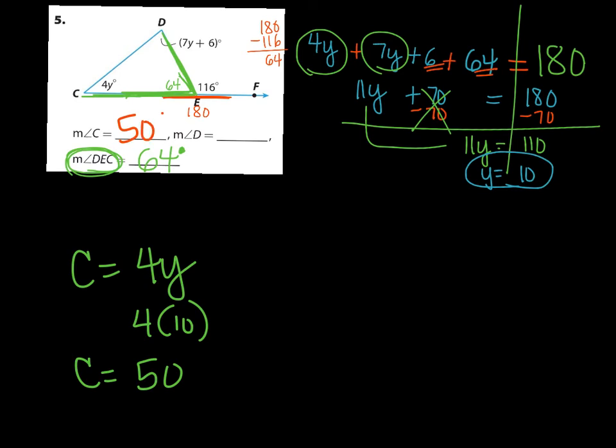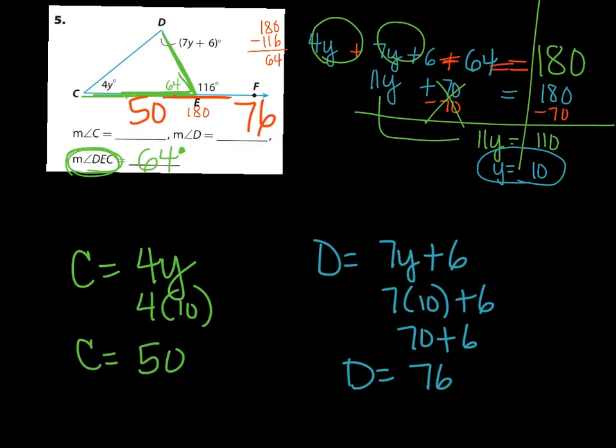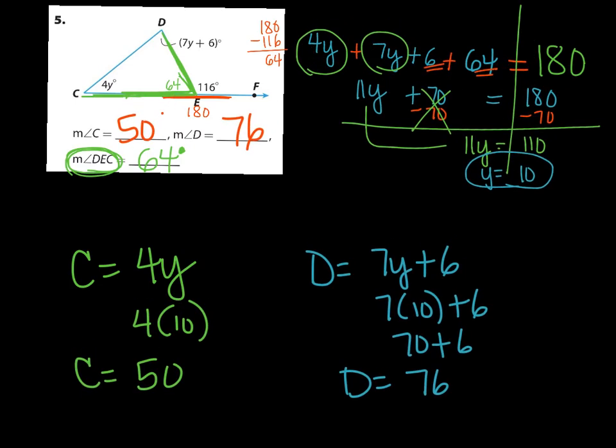And the last angle that I need to know is D. And D said 7y plus 6. Y again is equaling 10, so 7 times 10 plus 6, 70 plus 6 is 76. So the real value of angle D is 76. If for some reason I wasn't sure about that, I'm just going to fix that. I could add these three numbers together: 50 plus 76 plus 64, and they should equal 180 degrees.